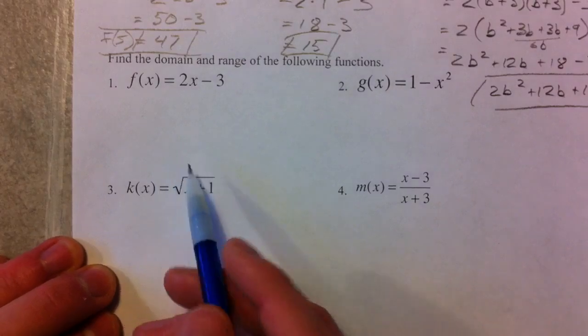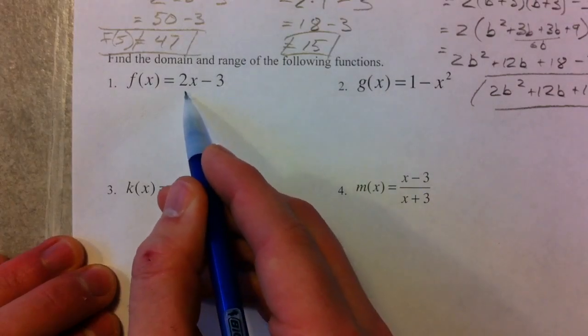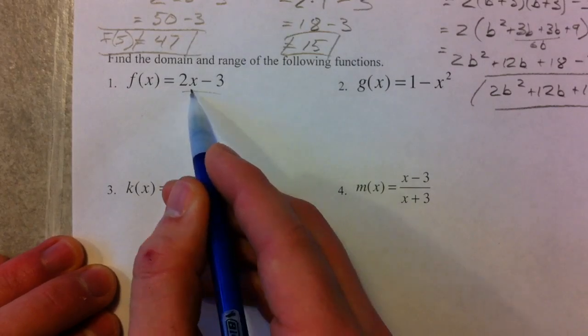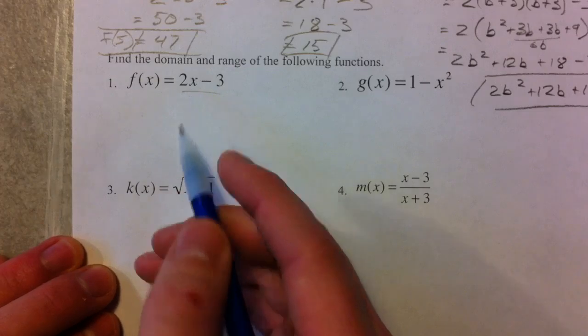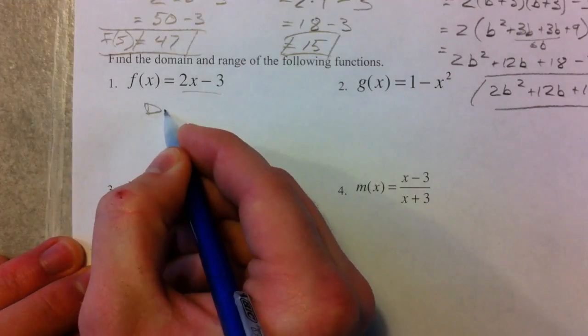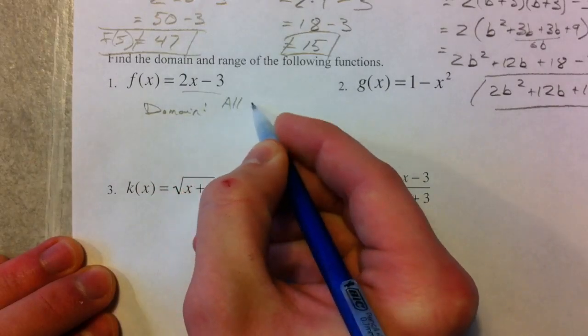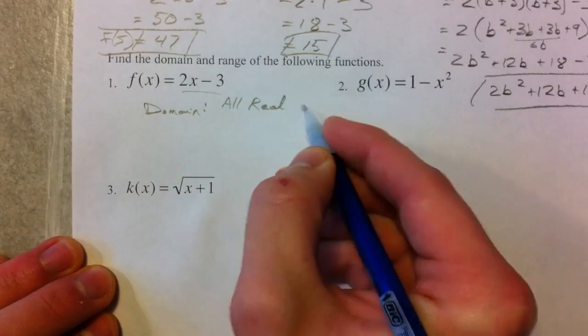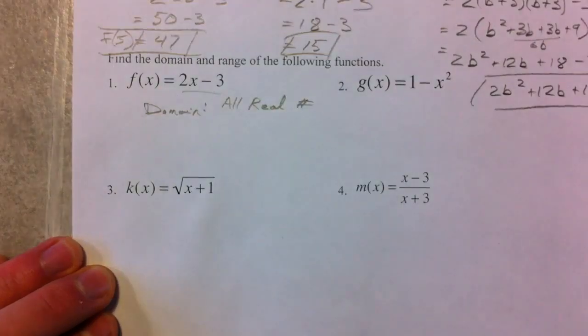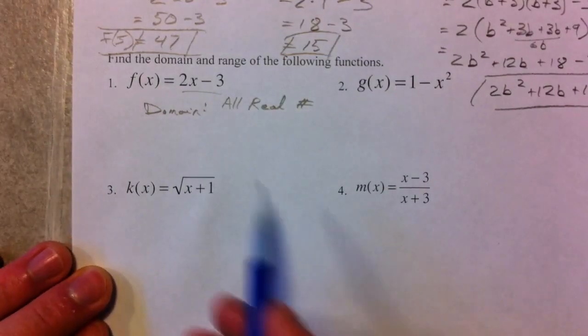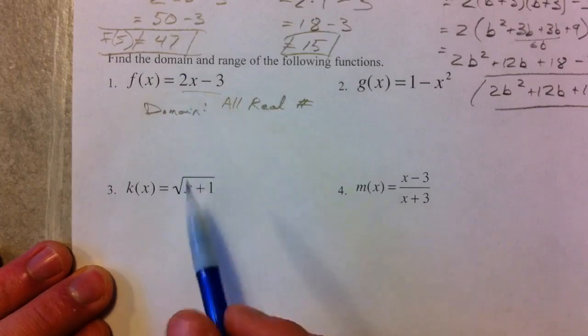And so, our domain for a linear function here, we can take any x we want to and plug it in here, and so our domain is going to be all real numbers. Real numbers are just all of those numbers on the number line. We can plug in any single thing we want.